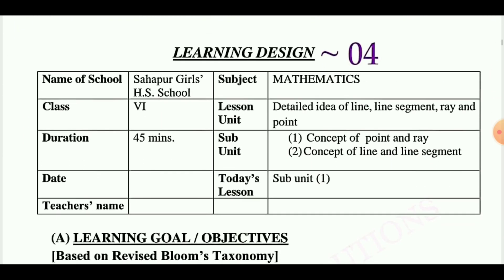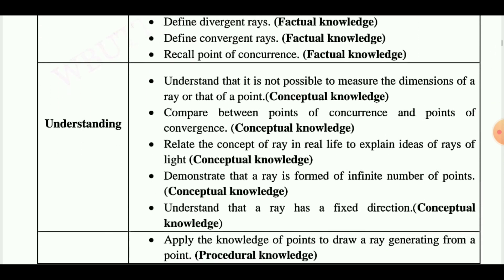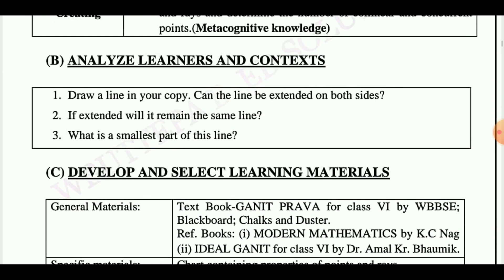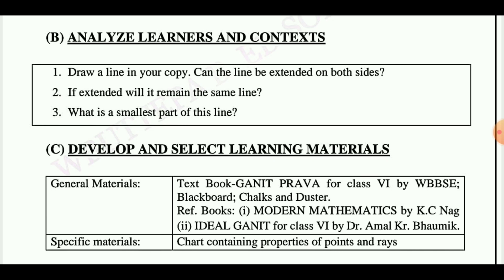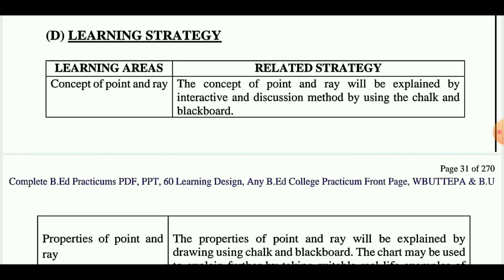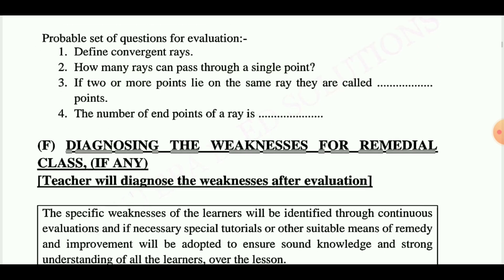Learning design number four is taken from class six and today's lesson is concept of point and ray. The learning objectives are: remembering, understanding, applying, analyzing, evaluating, creating. Next point is analyze learner and context, then develop and select learning materials and learning strategy — this is the most important point. Next is design for evaluation and lastly diagnosing the weakness for remedial class.